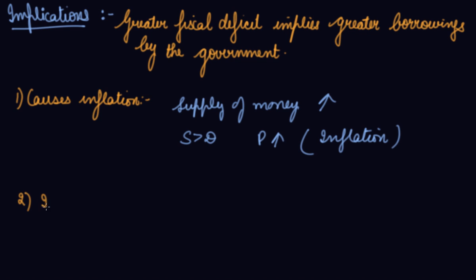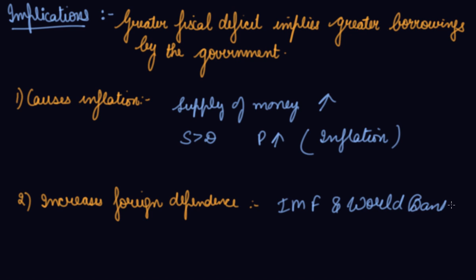Second, it increases foreign dependence. The government, if RBI is not able to give the loan, what government does is, government borrows loans from the rest of the world, from other countries or from IMF, that is International Monetary Fund or the World Bank. The government takes loans from outside India. So, it will increase foreign dependence.